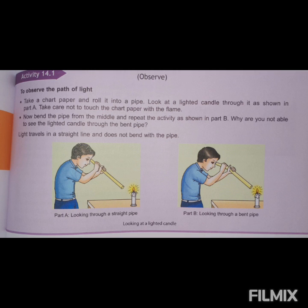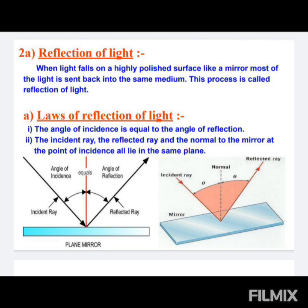Now we will observe an activity to observe the path of light. We will take a chart paper and roll it in the form of a pipe, then try to look at a candle placed on a table. We will then bend the pipe from the middle and repeat the same thing to see the candle. We will observe that we are not able to see the candle, which shows that light travels in a straight line and does not bend when the pipe is bent. We are able to see the light only when the pipe is straight.